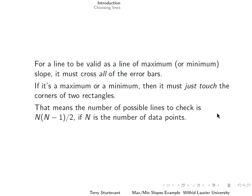The number of possible lines to check for either the maximum or the minimum slope is n times n minus 1 over 2, if n is the number of data points. Because the leftmost point has to be checked against all the ones to the right of it, the next point has to be checked against all the ones to the right of it, and so on.